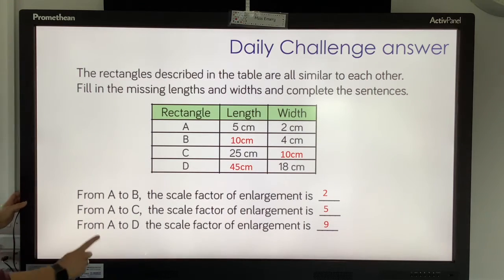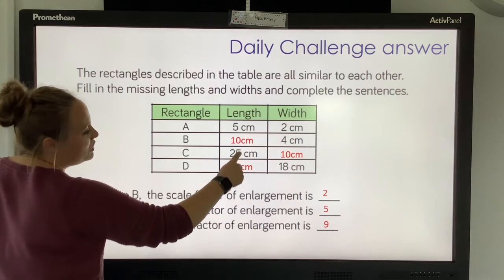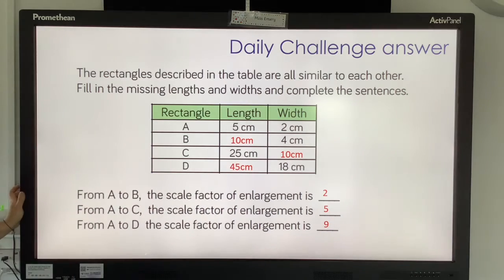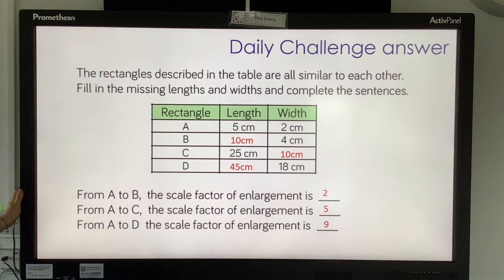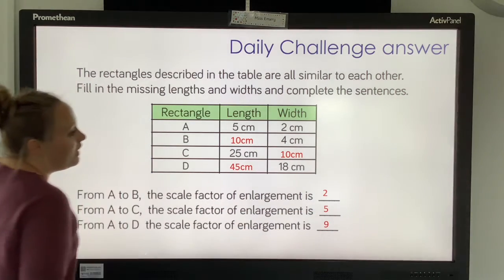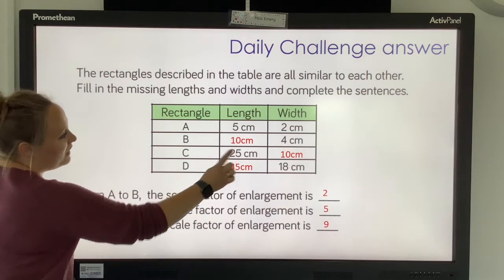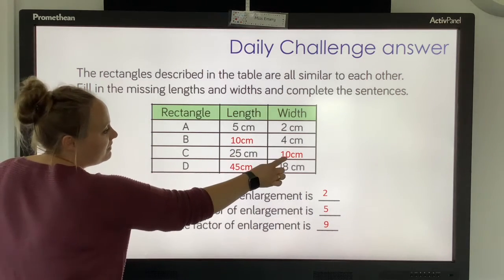Then from A to C, you've gone from 5 to 25. And to do that, you've multiplied by 5. So this time, your scale factor of enlargement is 5. Because 5 times 5 is 25, you do 2 times 5 to give you 10.